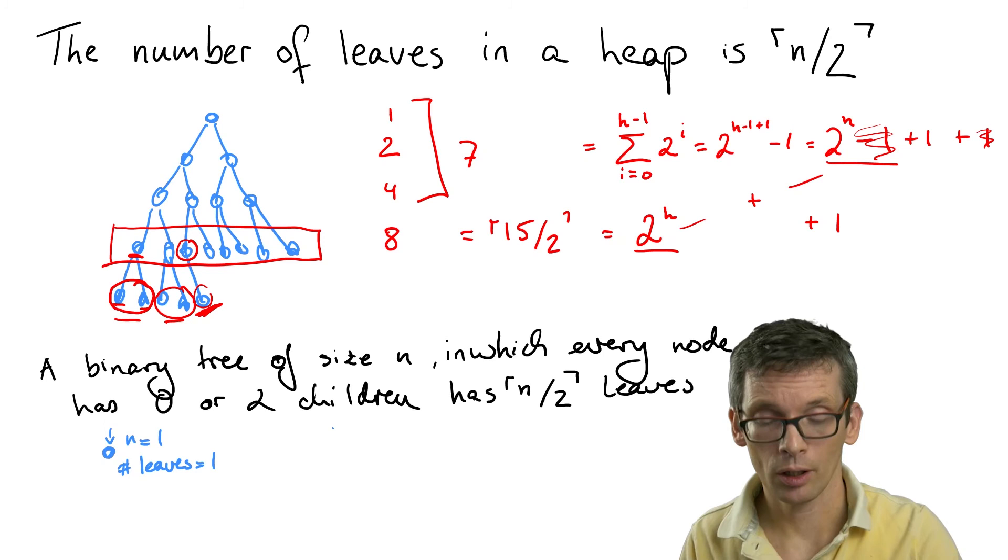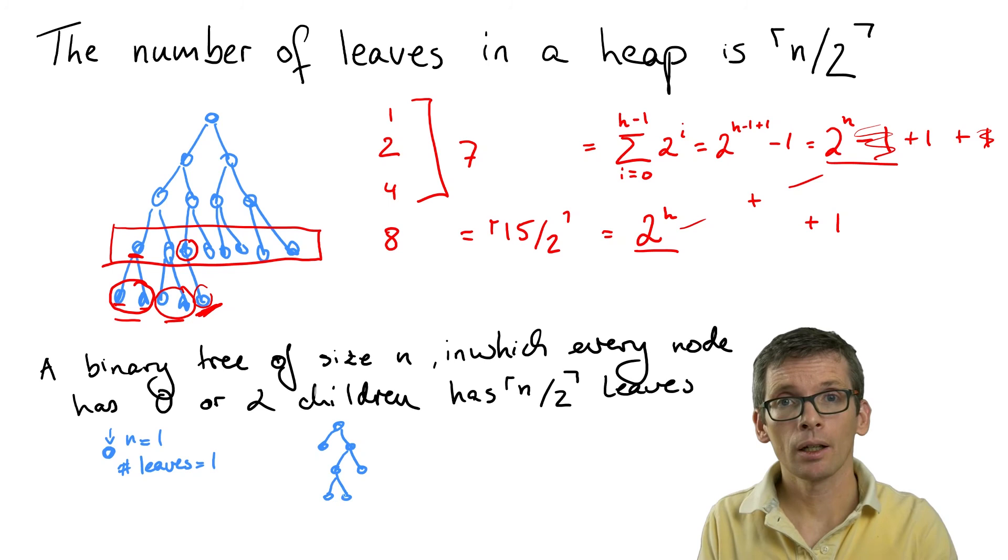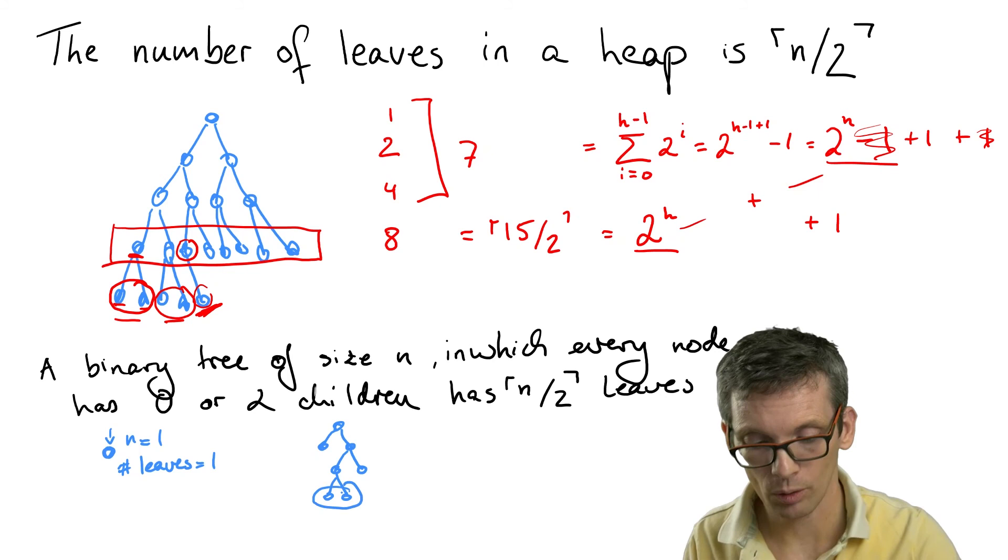Otherwise, let's have a larger binary tree with this property. Then let me take two nodes, two siblings of height zero, these two here. Look at the tree without those two.